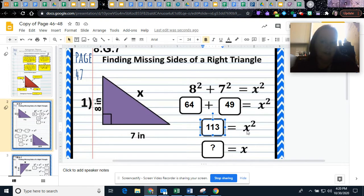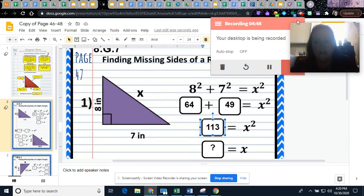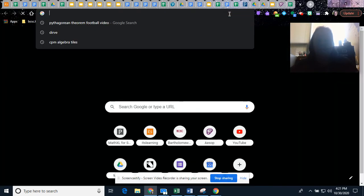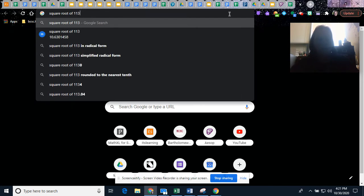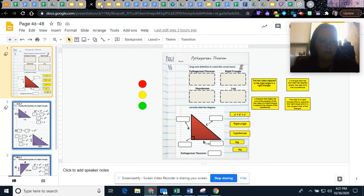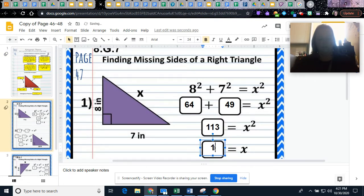The opposite of squaring a number is to take its square root. The square root of X squared, what times itself gives you X squared? That would be X. On this side, you need to take the square root of 113, so you can do that on a calculator. Before I hit enter, we know it's going to be irrational because we do not know what times itself gives us 113. We know it's going to be a long decimal. Here we go. It is 10.63. We will round to the nearest hundredth unless the problem tells you otherwise.